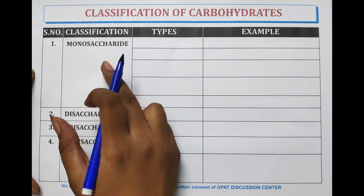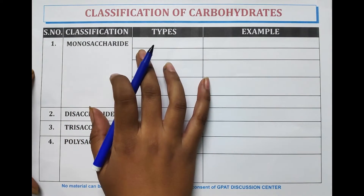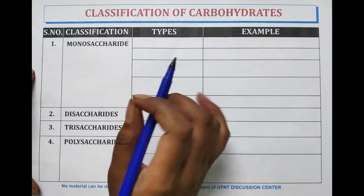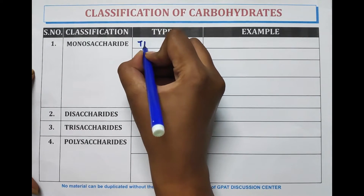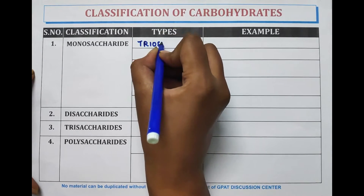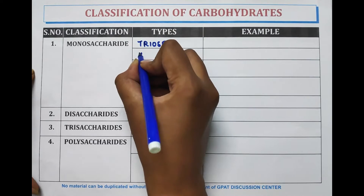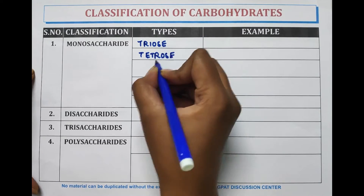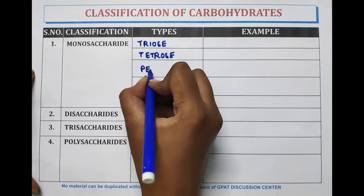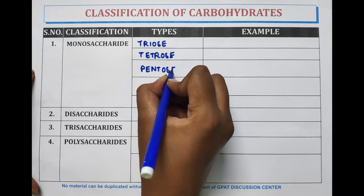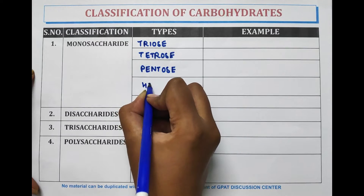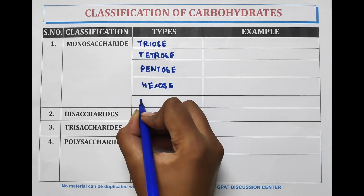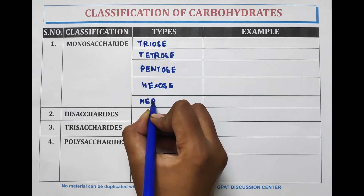Carbohydrates are divided into four types. The first one is monosaccharide, which is further divided into five subtypes: triose, tetrose, pentose, hexose, and heptose. These five are the types of monosaccharides.